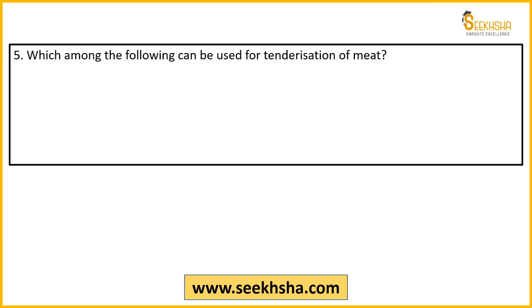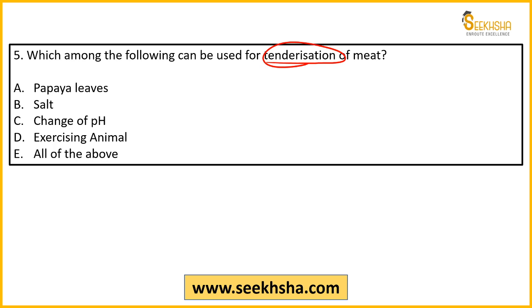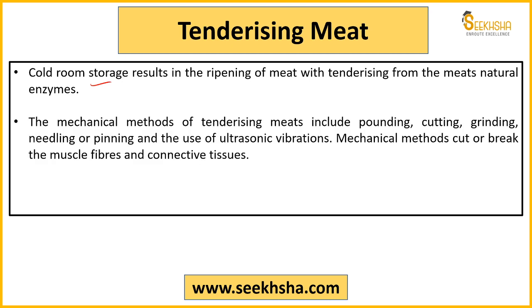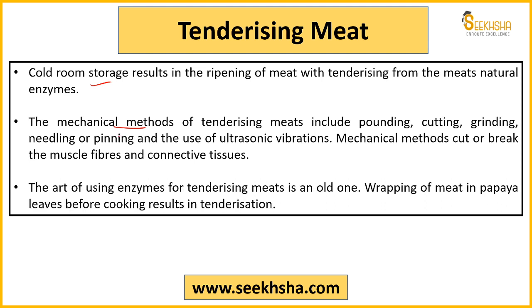Next question: Which among the following can be used for tenderization of meat? Tenderization of meat basically means making the meat soft and easy to chew, improving flavor. The answer is option D — all of the above. These methods include cold room storage, aging of meat, and more.